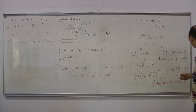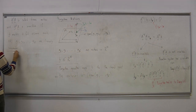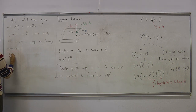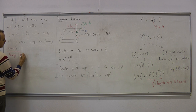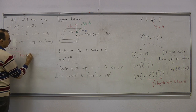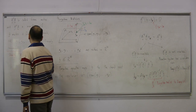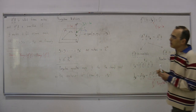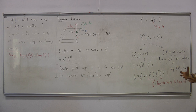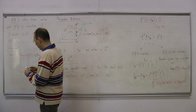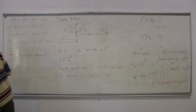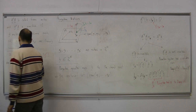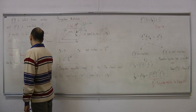A brief advanced note: showing that the range space of A transpose A equals the range space of A transpose can be a little difficult using set arguments, but it can be trivial using what we call singular value decomposition (SVD).